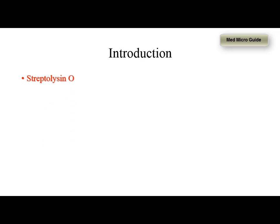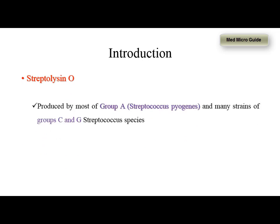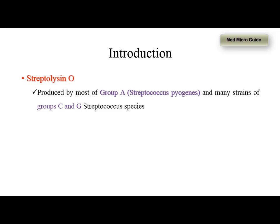Streptolysin O is an oxygen labile hemolytic exotoxin. This is produced by group A streptococci — that is Streptococcus pyogenes — and also by some of the strains of group C and group G streptococci.